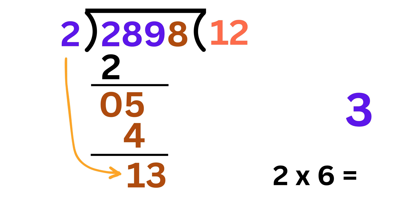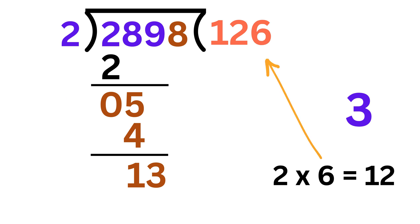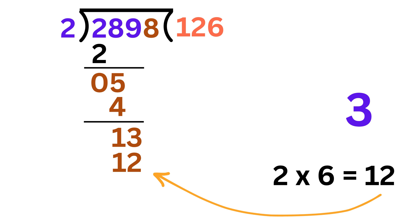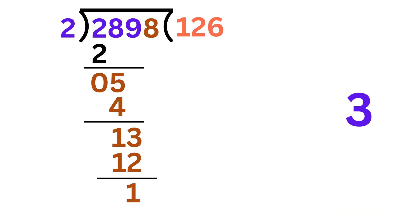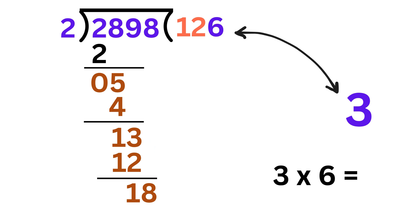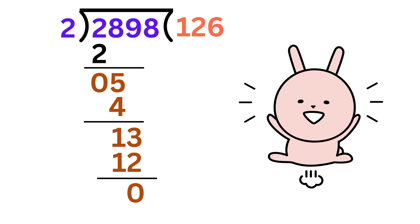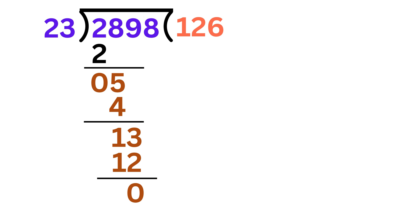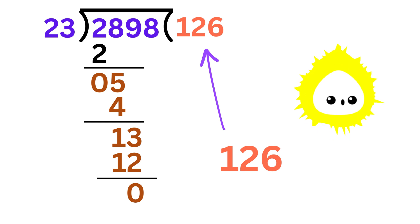Then 2 times 6 is 12, so write 6 here and 12 here. Now the remainder left is 1. Finally bring this 8 to make it 18. Now multiply this 6 with 3 to get 18, and subtract it with this 18 to get 0, which means we are done, because we have used our last value and we got a 0. So the answer to this question is 126.